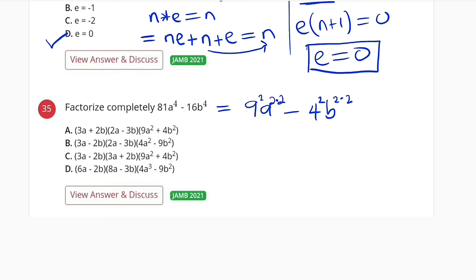I have a target, so I can factor out one power here. So we have 9a squared raised to the power of 2, can you see that, minus 4b squared raised to the power of 2.